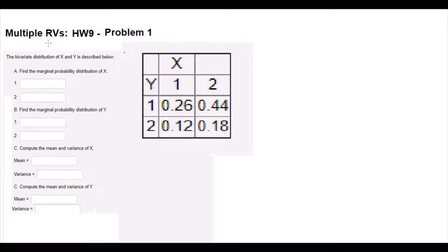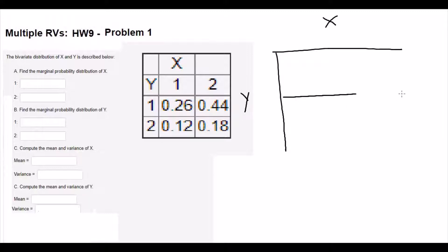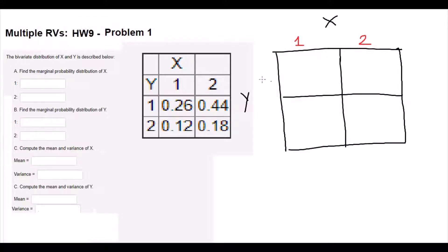Problem number 1. The bivariate distribution of x and y is described below. Find the marginal probability distribution of x and y and compute the mean and variance of x and y. Here we were given a table. I am going to rewrite this table for us to understand better. Here our x value is given vertically and our y value given horizontally. And this is x1 and x2 value, and this is y1 and y2 value. So this cell here which is 0.26 is our x1 and y1 — the intersection of x1 and y1 value — and we can also rewrite this as coordinate form which is 1 comma 1.